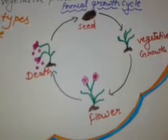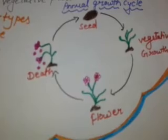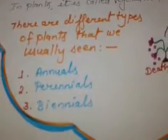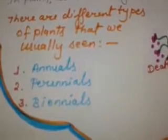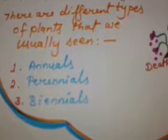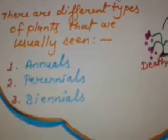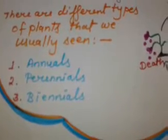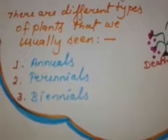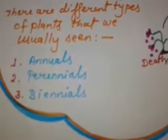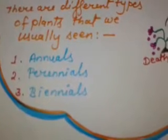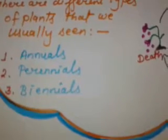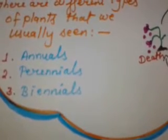Now, students, there are different types of plants that we usually see around us. One is annuals — from seed to flower and again to seed in a single growing season. Second is perennials — these plants come back year after year. And third is biannuals — this plant requires two years to complete their life cycle.